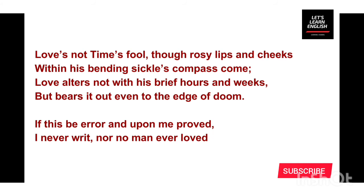The last two lines form the couplet. 'If this be error and upon me proved, I never write nor no man ever loved.' The poet tells readers that if they feel what he has said throughout this poem is error, they should prove him wrong. And if proven wrong, he will never write, and one can say no man ever loved anyone. This is how the poem ends.